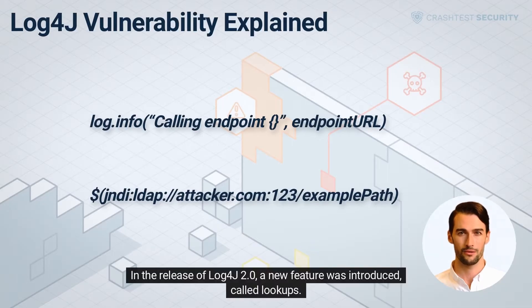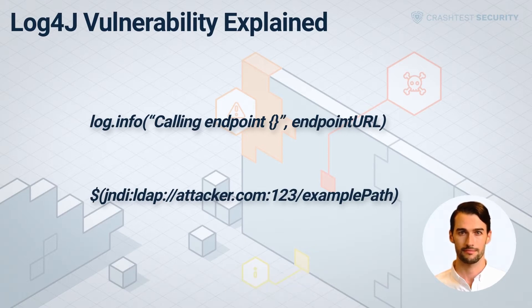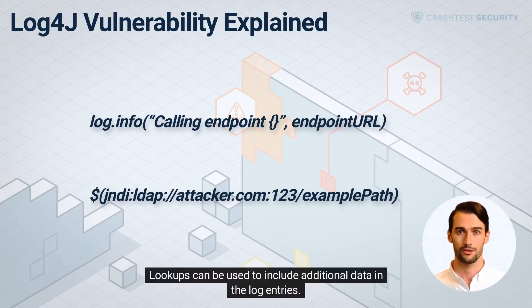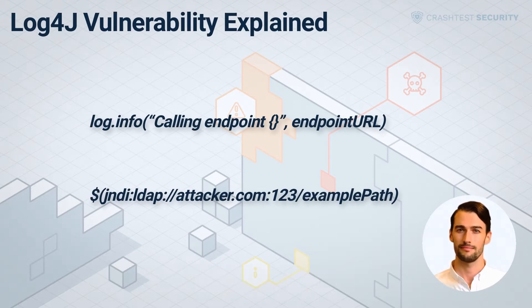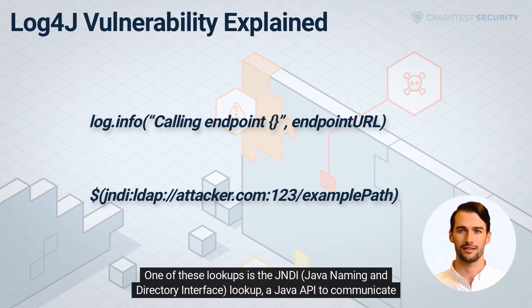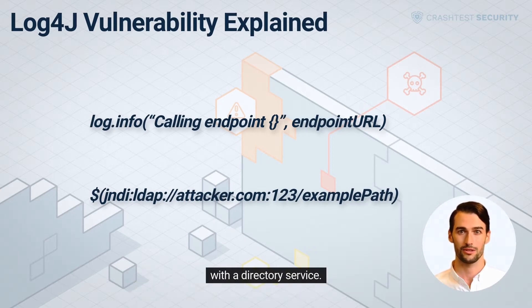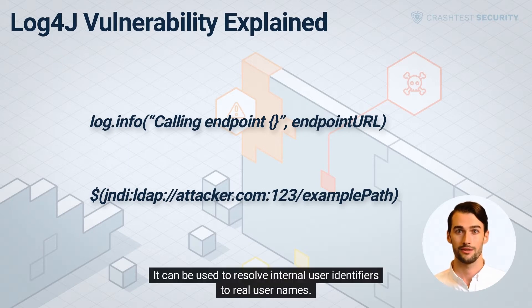In the release of Log4j 2.0, a new feature was introduced called Lookups. Lookups can be used to include additional data in the log entries. One of these lookups is the JNDI — Java Naming and Directory Interface — Lookup, a Java API used to communicate with a directory service. It can be used to resolve internal user identifiers to real user names.